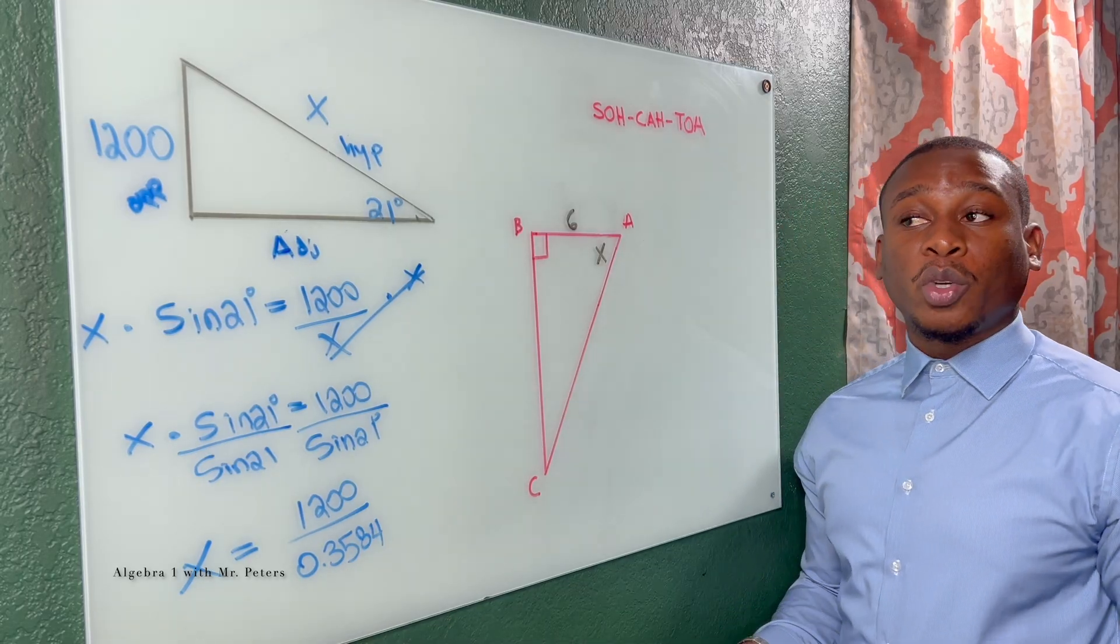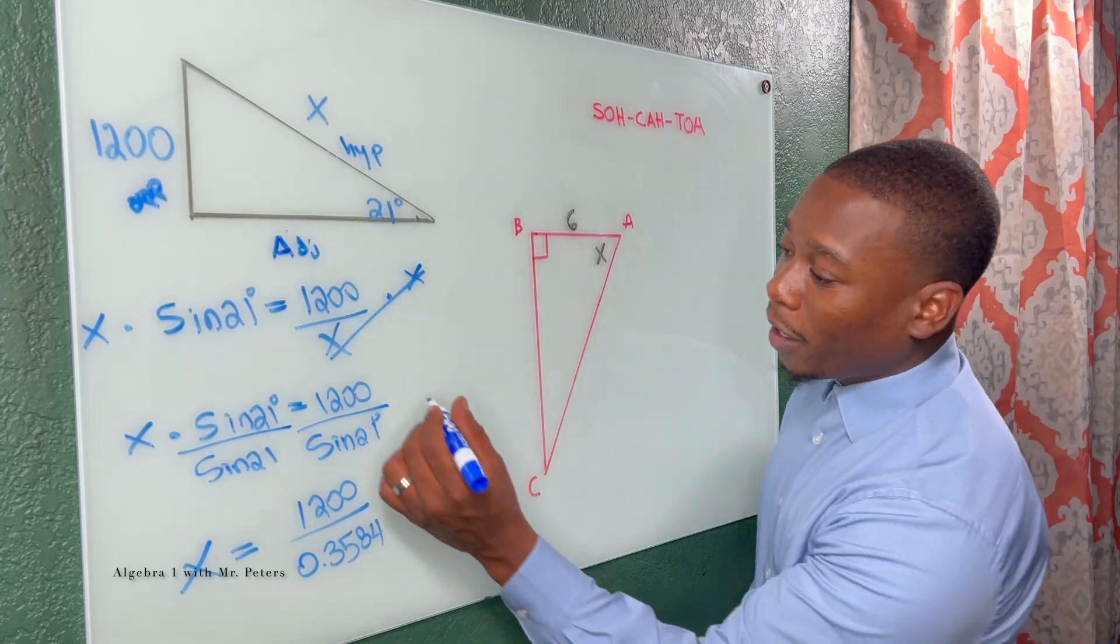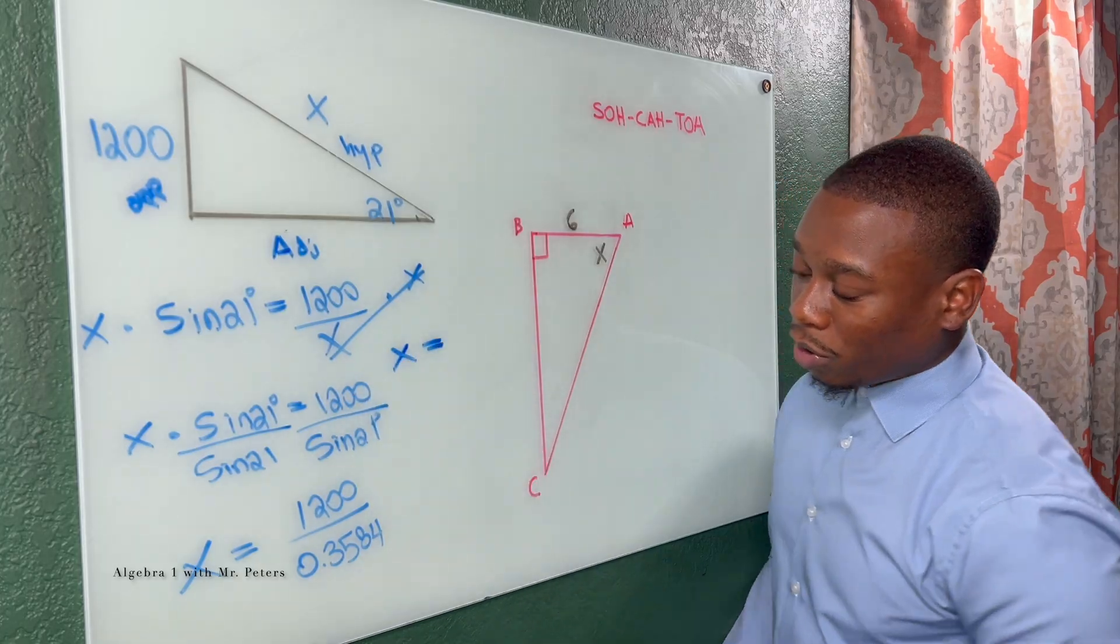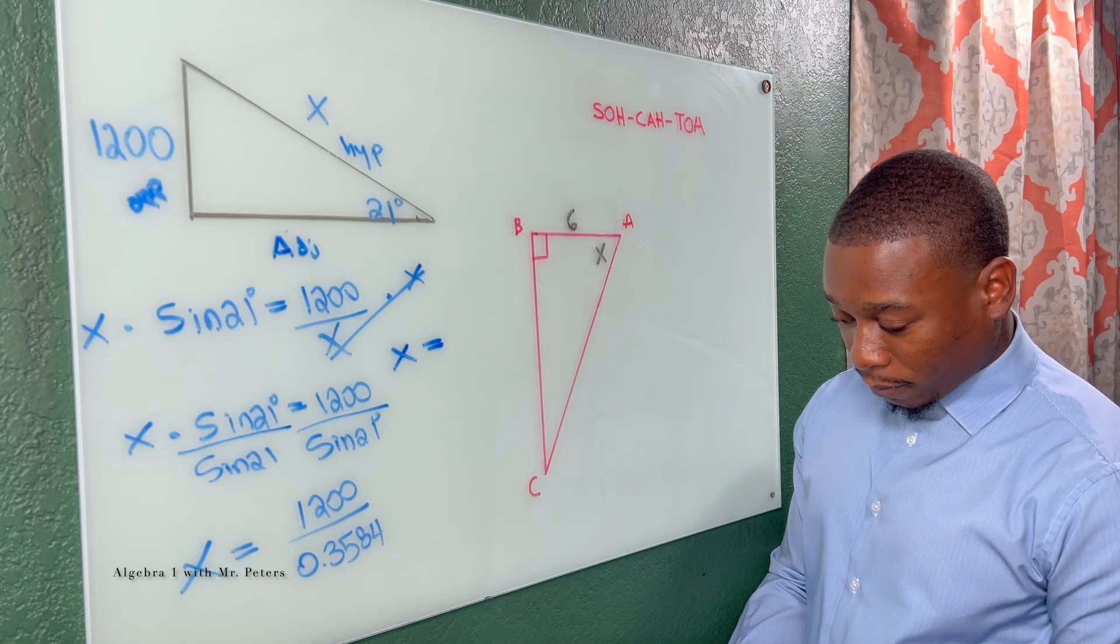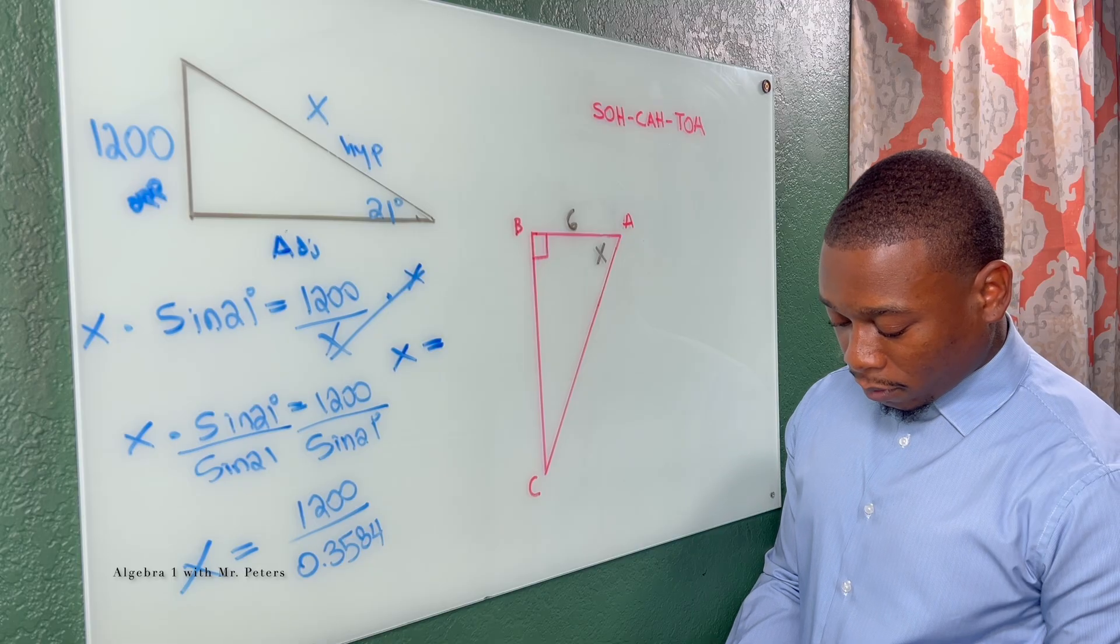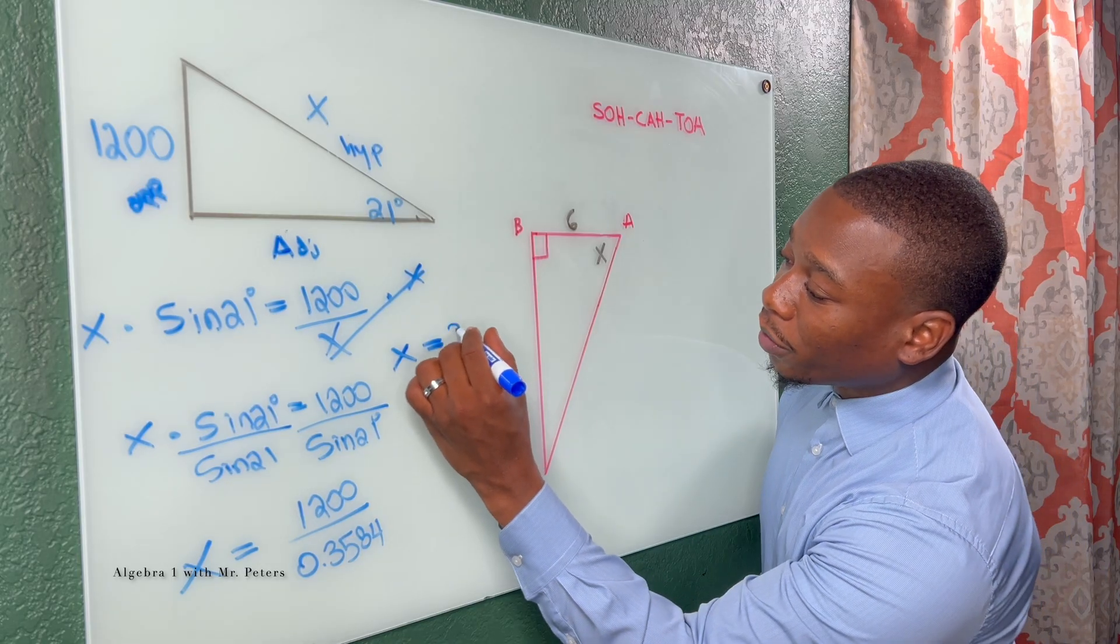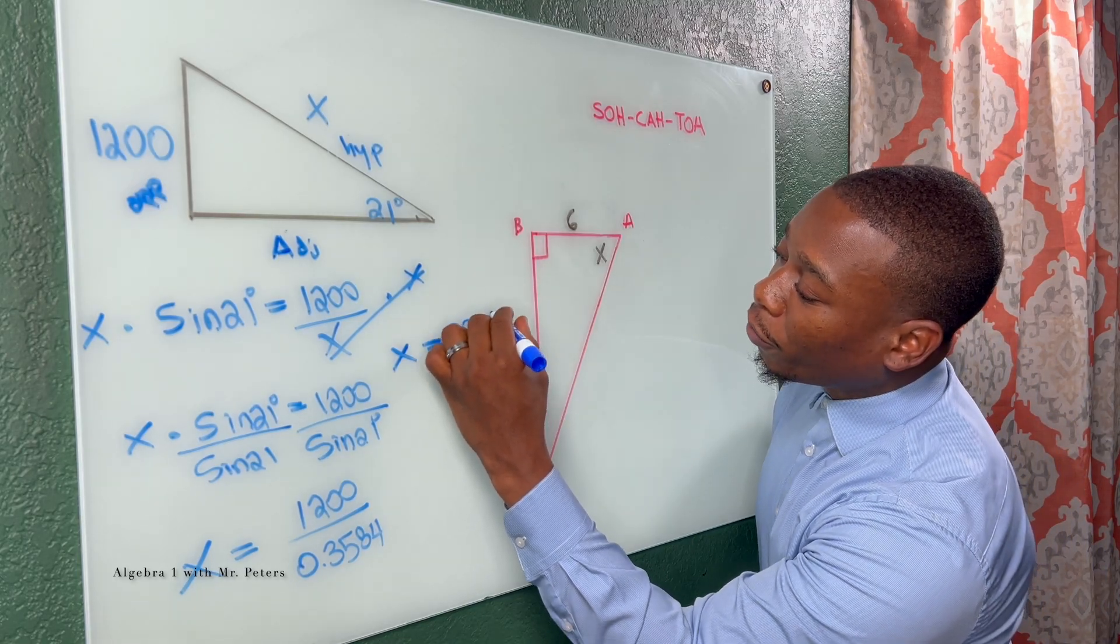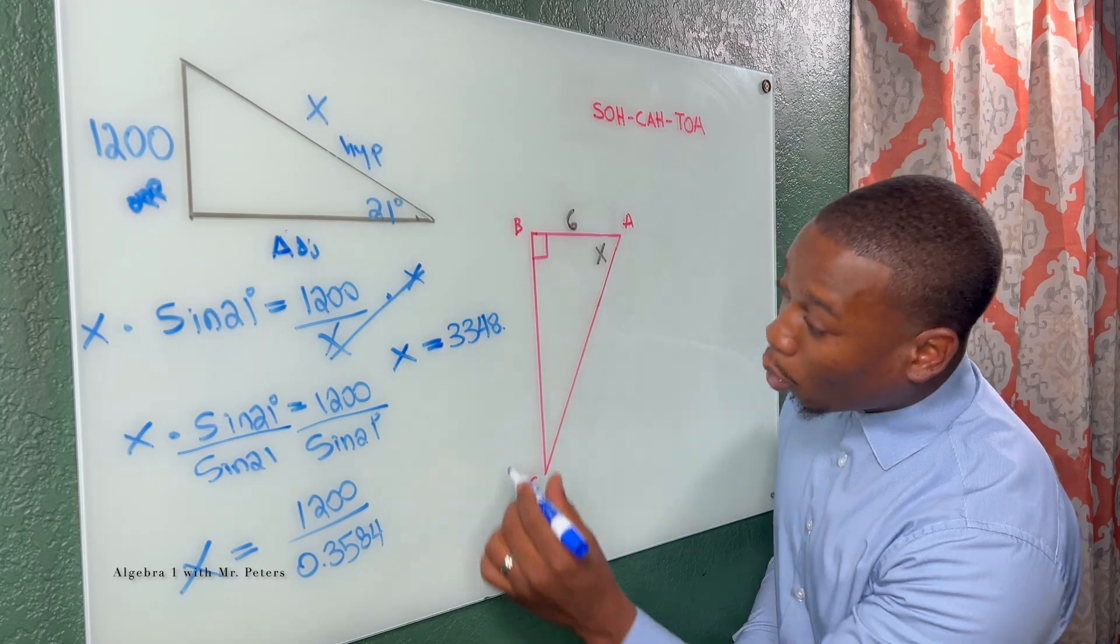And now all I have to do is simplify by dividing. So X is equal to, and let's do our division. X is equal to 3,348.2.